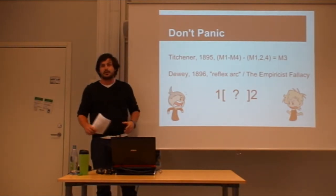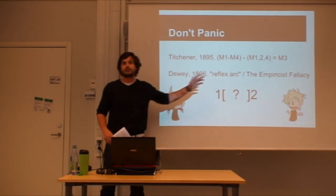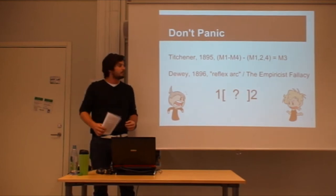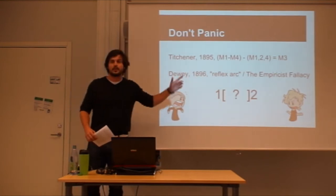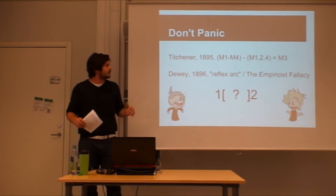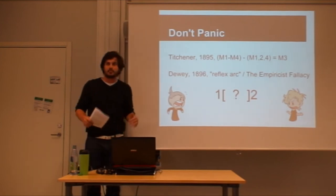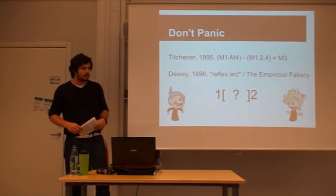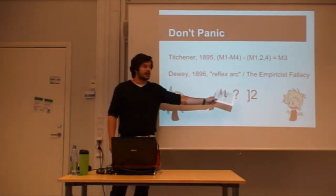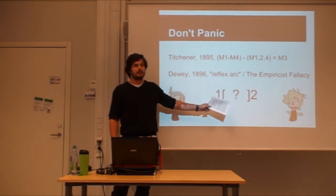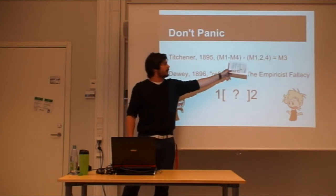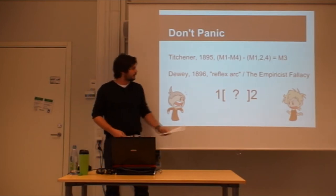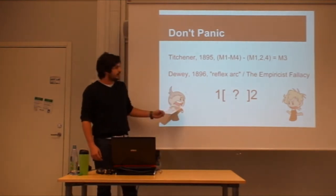This was critiqued by Dewey the year after. He said that what Titchener was talking about is a reflex arc — it starts in the body, ascends to the mind, and goes out to the body again in an isolated and linear fashion. Dewey said it's subject to the empiricist fallacy. His point was that we're actually looking at one behavior, then a second behavior, but everything in between — M1 through M4 — is an assumption. They're not something we have observed. So that process in between is the real question.